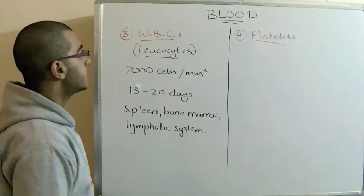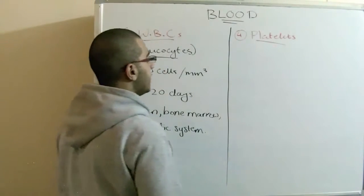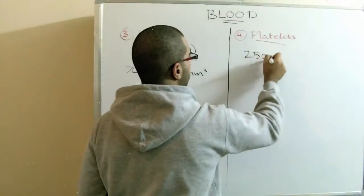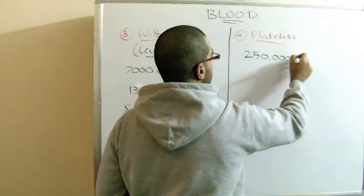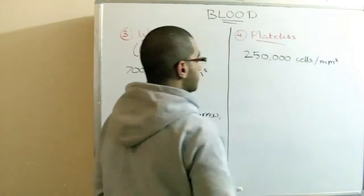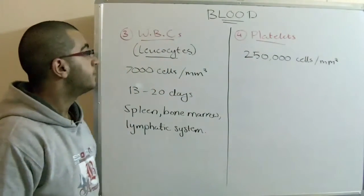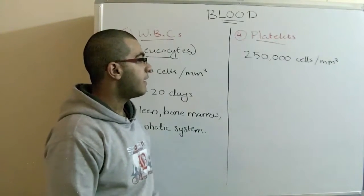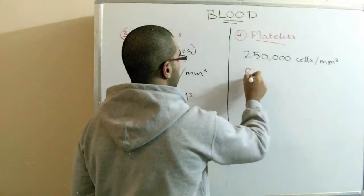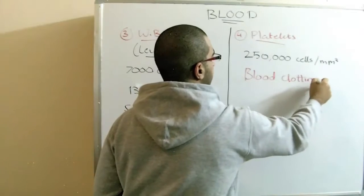So this is it for the white blood cells. The blood platelets are very tiny microscopic cells and they are about 250,000 cells per cubic millimeter. They roam inside the blood and they have an important function in blood clotting, which we will talk about later.